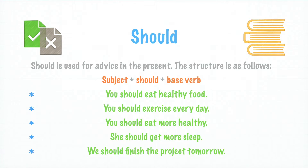Subject plus should plus base verb. Sujeto más should más forma base del verbo. You should eat healthy food. Deberías comer comida saludable. You should exercise every day. Deberías ejercitarte todos los días. You should eat more healthy. Deberías comer más saludable. She should get more sleep. Ella debería dormir más. We should finish the project tomorrow. Deberíamos terminar el proyecto mañana.